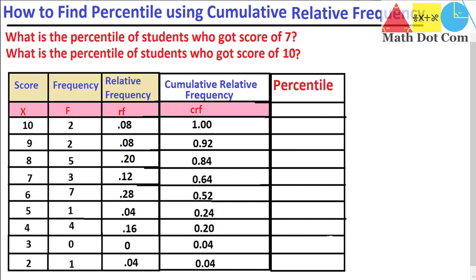So we have two questions. The first is: what is the percentile of the students who got the score of 7? And the second question is: what is the percentile of the students who got a score of 10? To find the percentile, we need to have the score and frequency — that is, a frequency distribution table — in order to find the percentile using the cumulative relative frequency.